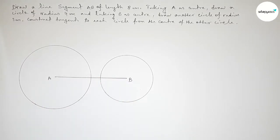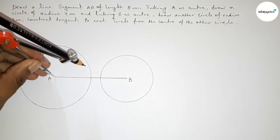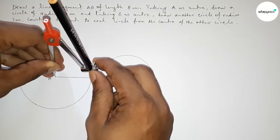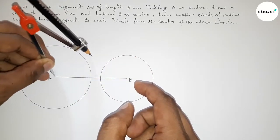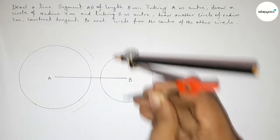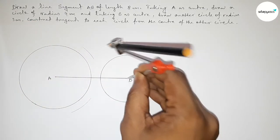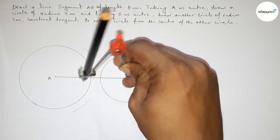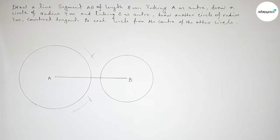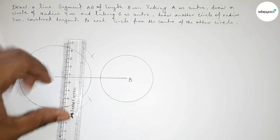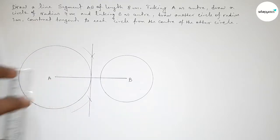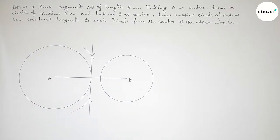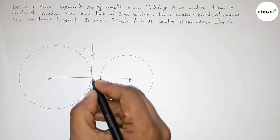Next, we bisect the line AB. Putting the compass on point A and taking greater than half of AB, drawing an arc. Then putting the compass on point B and cutting arcs above and below. Joining the intersection points, which bisects line AB at a midpoint.